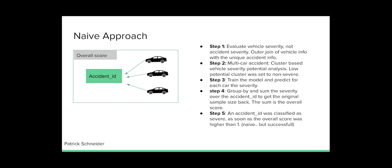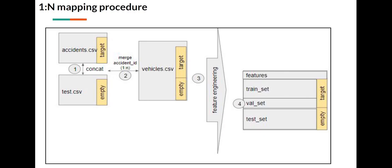So how did the dataset merging process take place? At first, we concatenate the test set with the training set to enable a better feature engineering process. In the second step, we merge the vehicle data with the information of the accident information. This gives us to each vehicle the information on the car accident. Then follows the third step with the feature engineering job. Later, we talk about the details of the features.